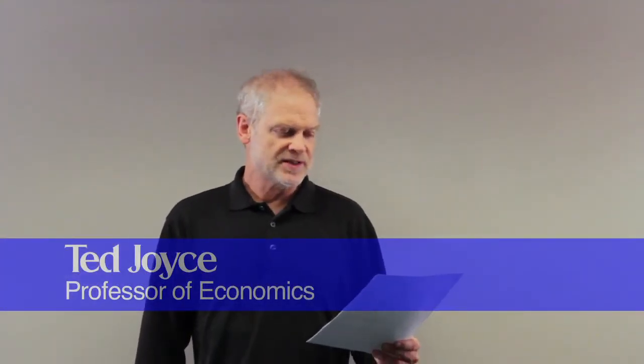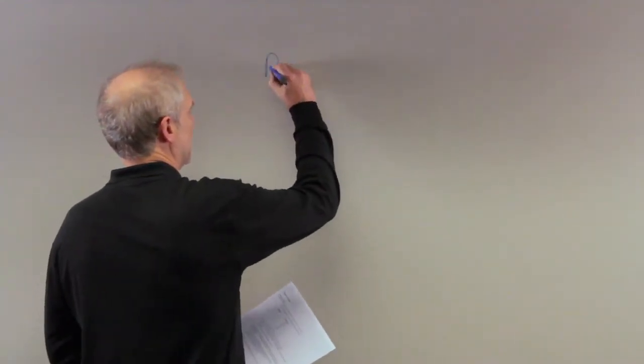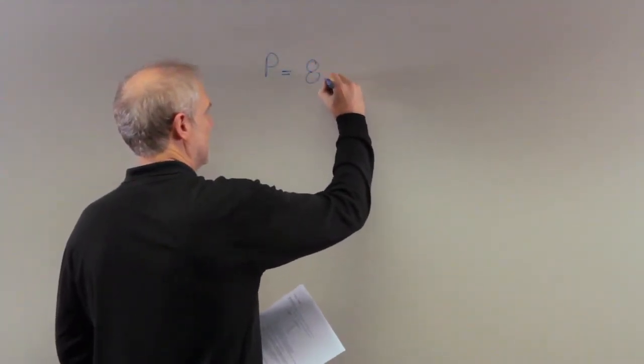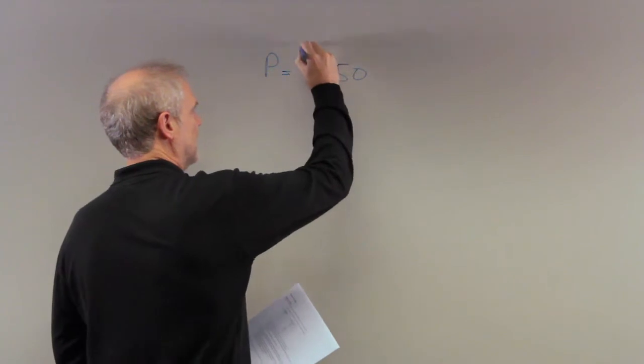It says Mrs. Smith operates a business in a competitive market. The current price is $8.50. Let's write that down. Price equals $8.50.